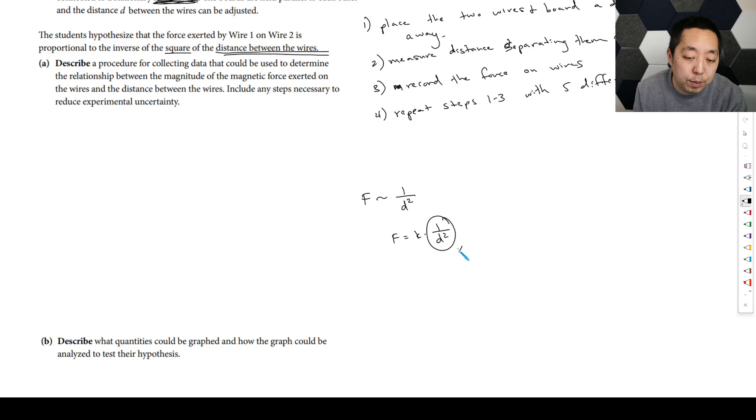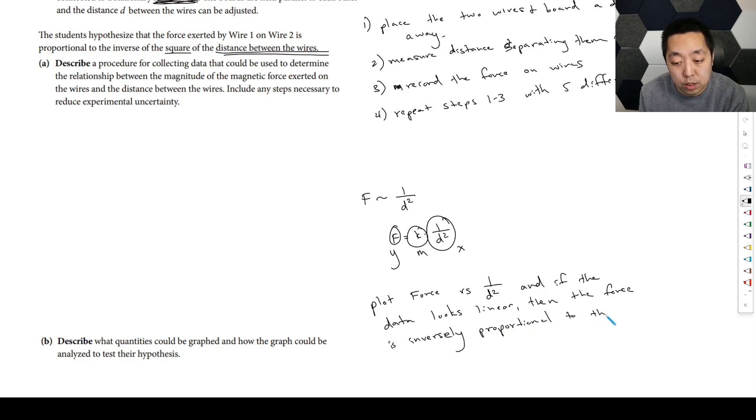And so you're just going to plot this. This is going to be our X value, this could be a Y, and this will be my slope M. So you're going to plot the force versus one over D squared. And if the data is linear, looks linear, then the force is inversely proportional to the distance. And that handles that.